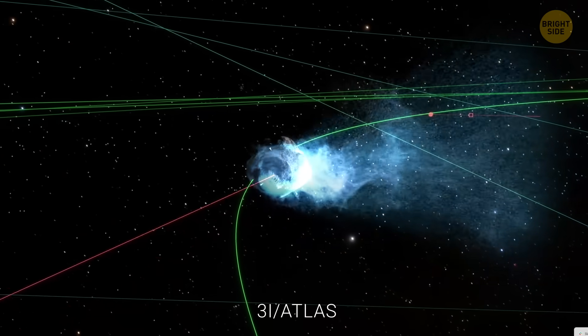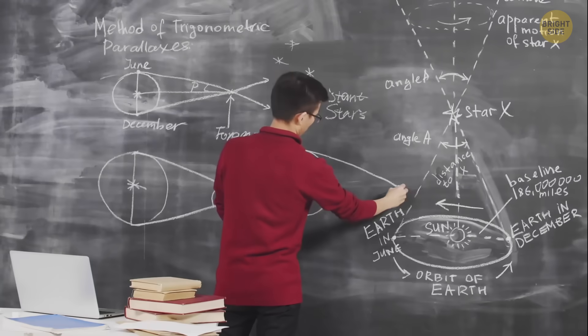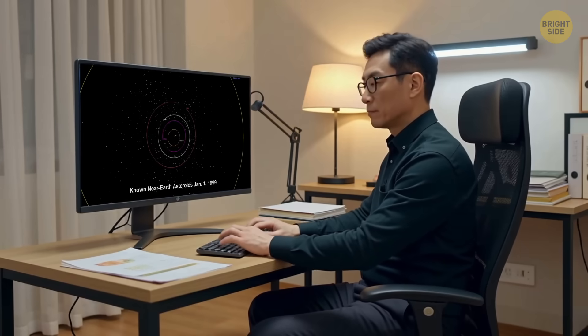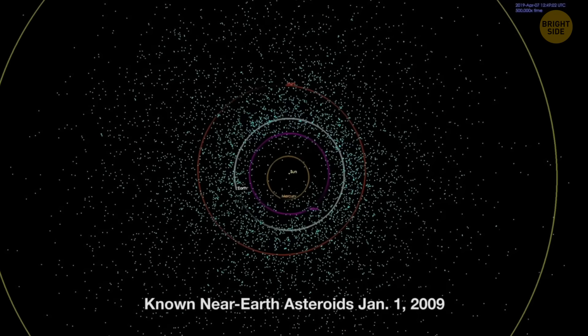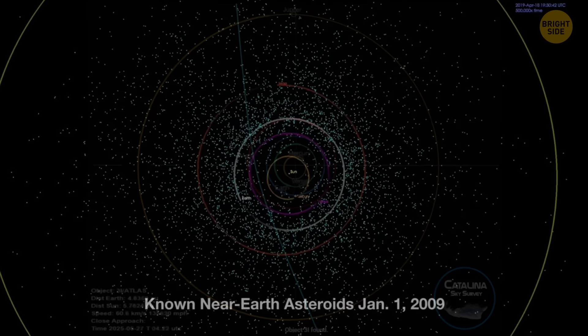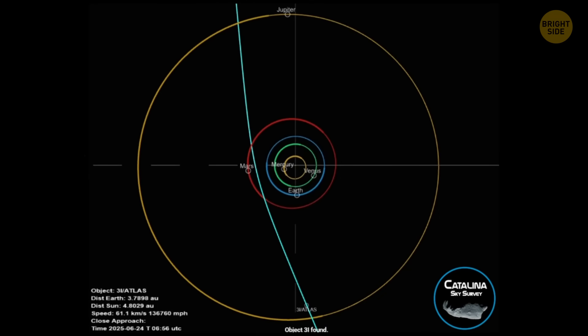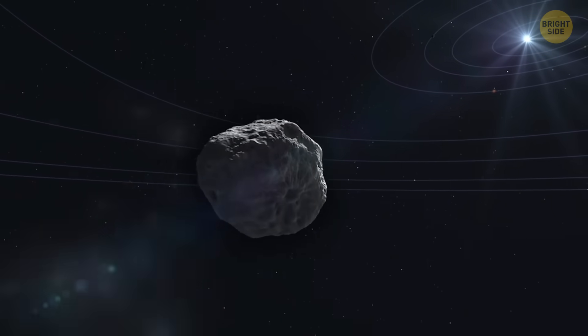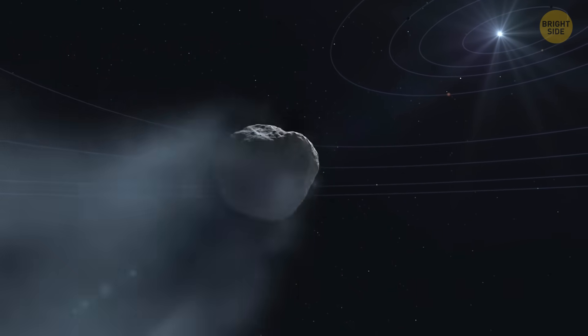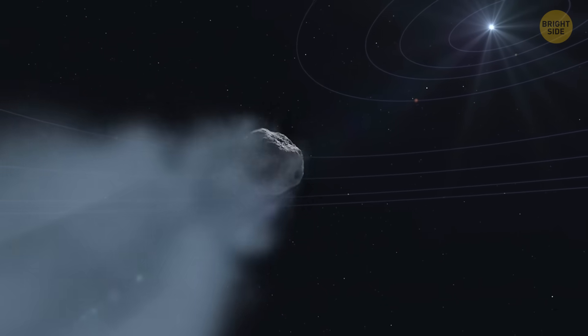But you might be asking, how do we know it actually came from outside our solar system? You see, normal comets are bound to the Sun. They swing around it in these big, looping orbits. But 3i Atlas isn't doing that. Its crazy speed and path show it's not on a closed orbit around the Sun. And the only logical explanation is that it came from another star system and just wandered into ours by chance.